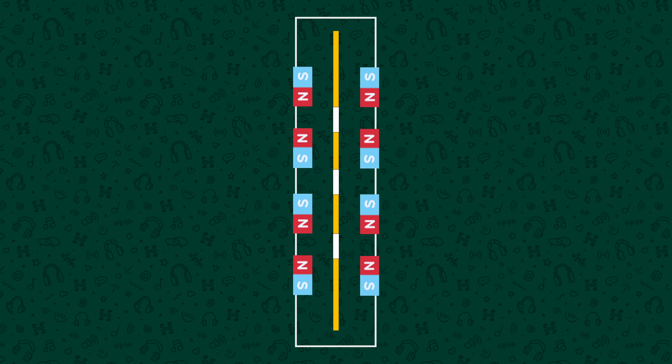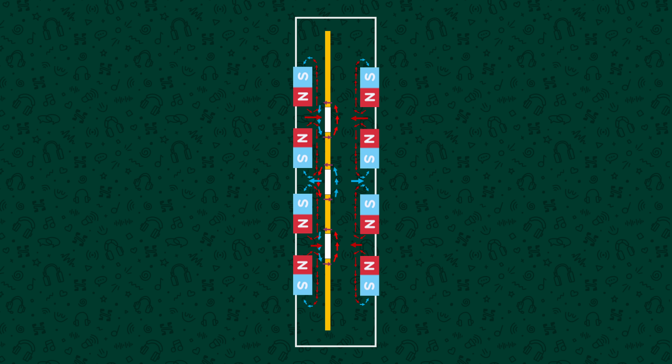The basic principle is the same as a dynamic driver — this sheet is not magnetic by itself nor are the traces, but when you pass an electrical current through the traces an electromagnetic field is induced and this again interacts with the magnetic field from the permanent magnets to push or pull the traces, and thus the diaphragm, towards or away from them. This movement of the diaphragm drives motion of air and therefore creates sound.